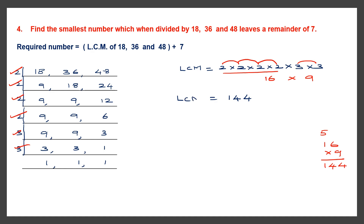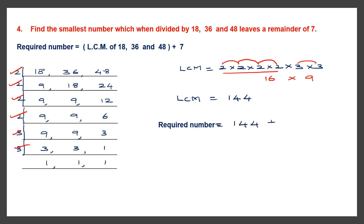So this is the LCM. Now to find the required number, we add 7 to the LCM. So the required number will be 144 plus 7. Let's add that: 4 plus 7 is 11 carry 1, 4 plus 1 is 5, giving 151. So the required number is 151 and this is our answer.